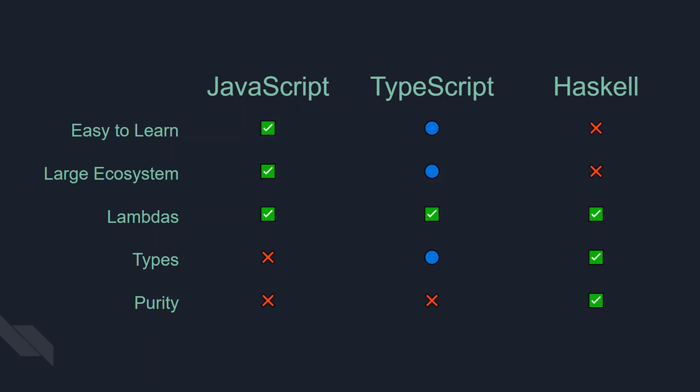TypeScript is an interesting middle ground. It's great to have better types, although not quite at the level needed to do a lot of the things we like to do in Haskell. TypeScript still lets you do effects everywhere, and that's a really important thing that I think Haskell brings to the table — we'll talk about that more later in this talk.